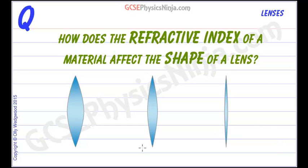So far, we've seen that the focal length of a lens is dependent on the refractive index of the material it's made from as well as the curvature of the lens surfaces.